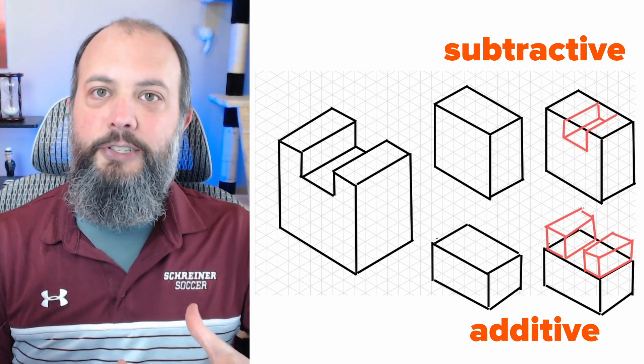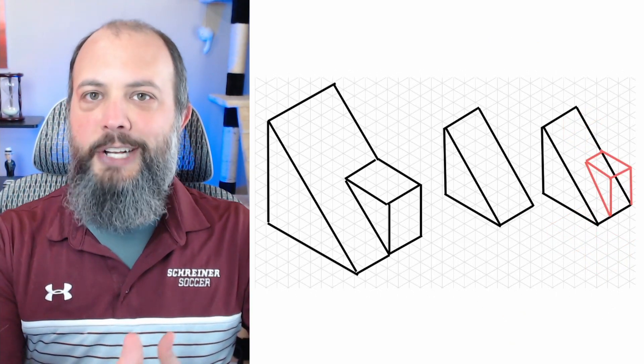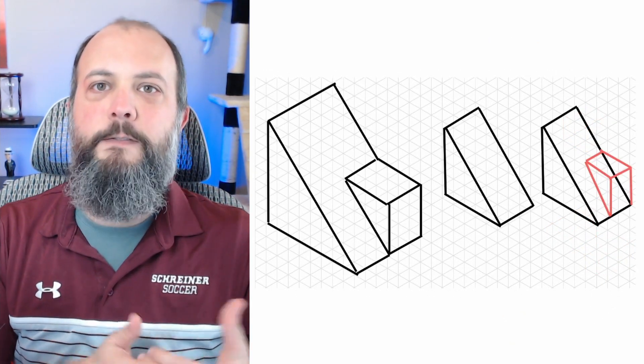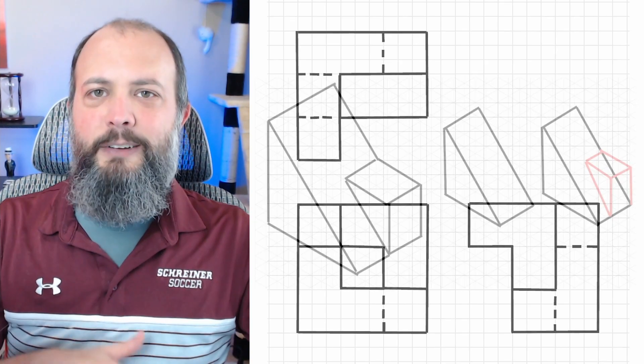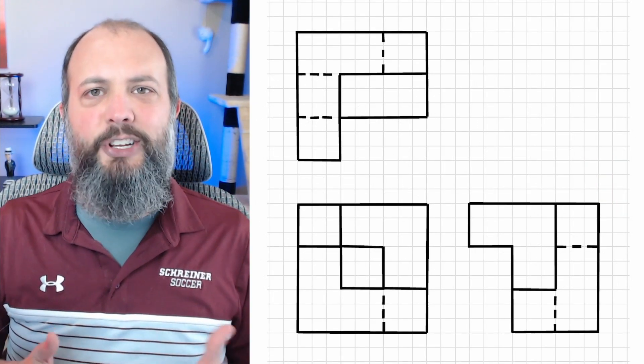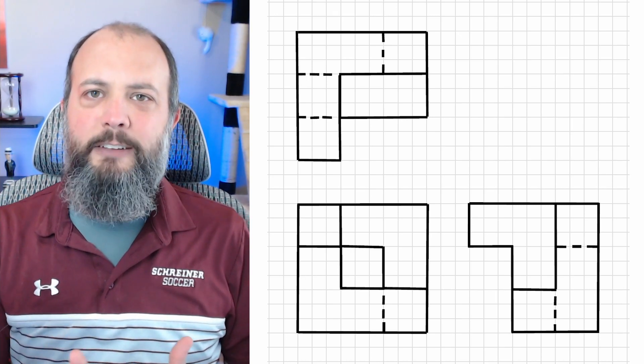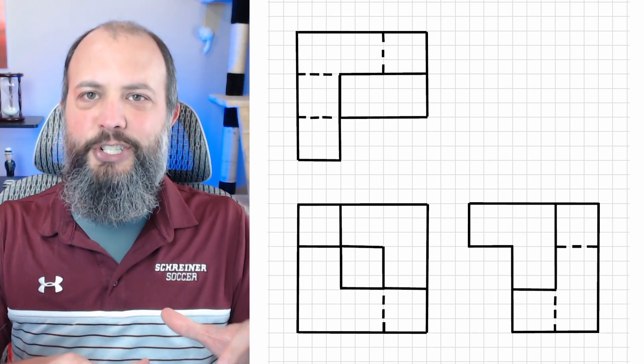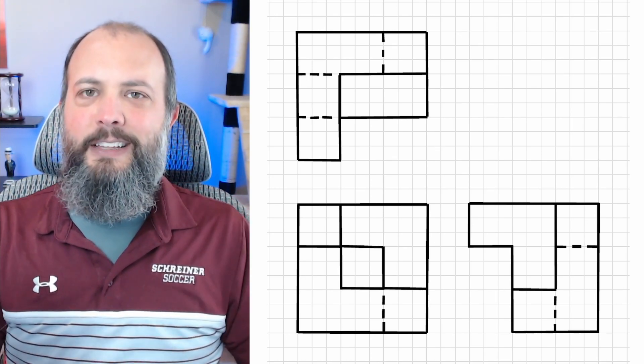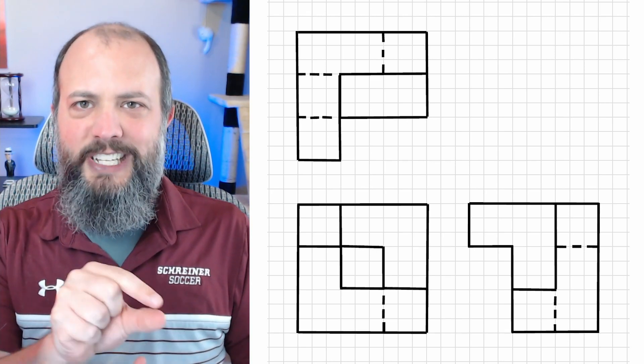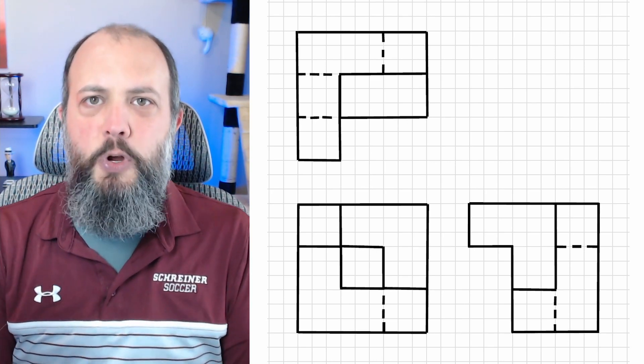Some problems are far easier to do one method than the other. For this wedge on top of a wedge problem, it's going to be far easier to do in an additive technique. But for this Rubik's Cube problem I'm drawing today, it's going to be far easier to do it subtractive because I know the overall size and shape of the outer rectangle. Then I'll just need to figure out which of the little small square boxes on the inside have been removed.